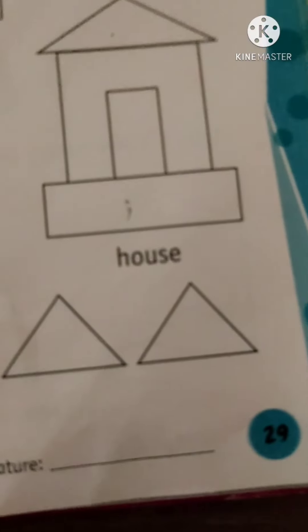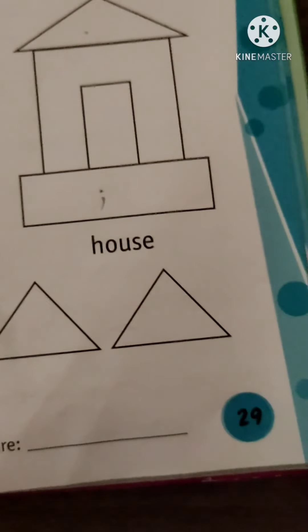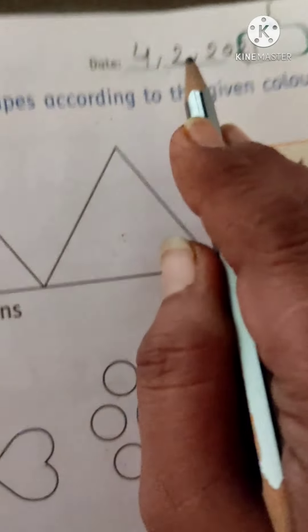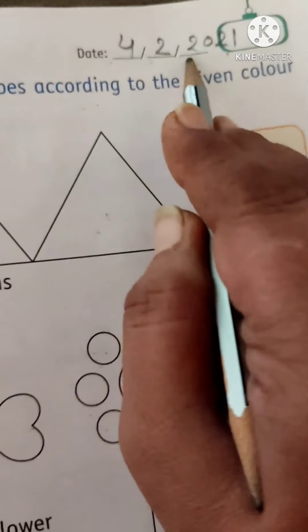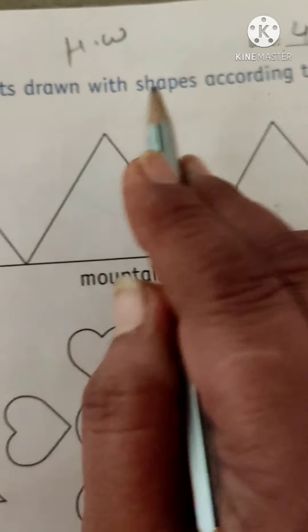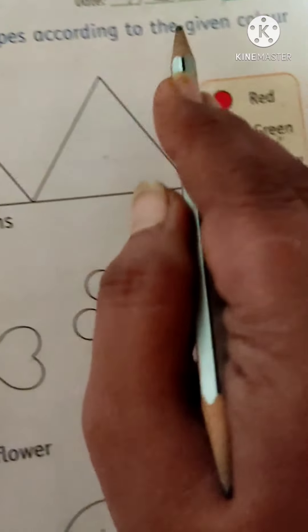In the same book, page number 29. Write same date, 4th February 2021. Color the objects drawn with shapes according to the given color key.